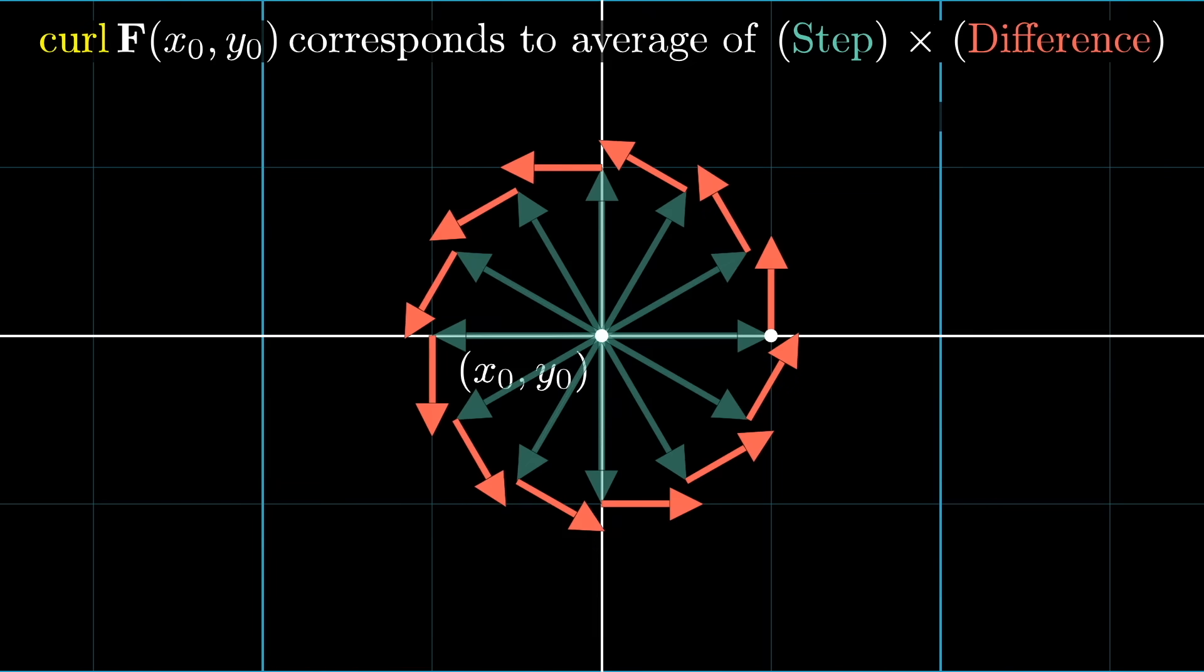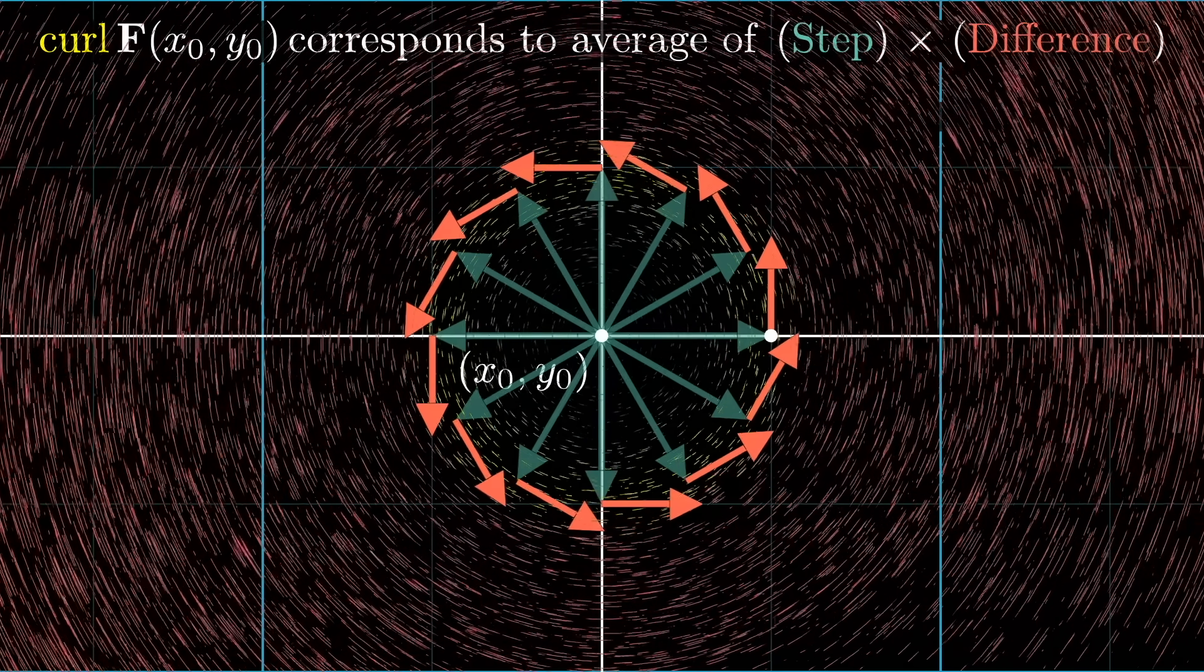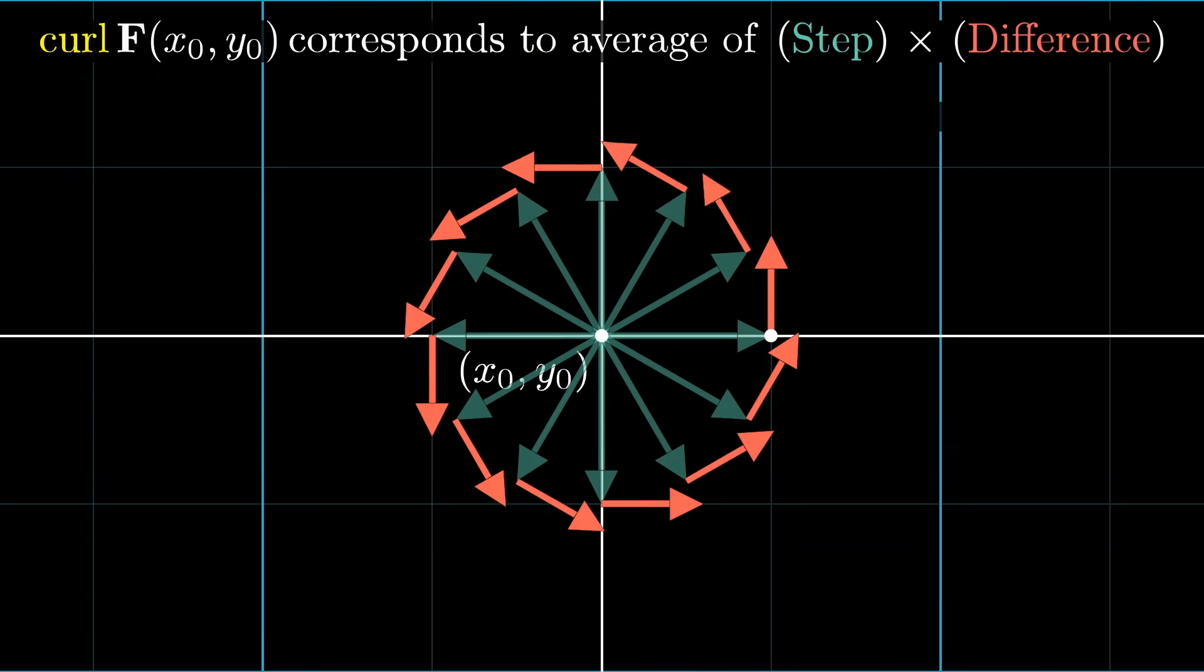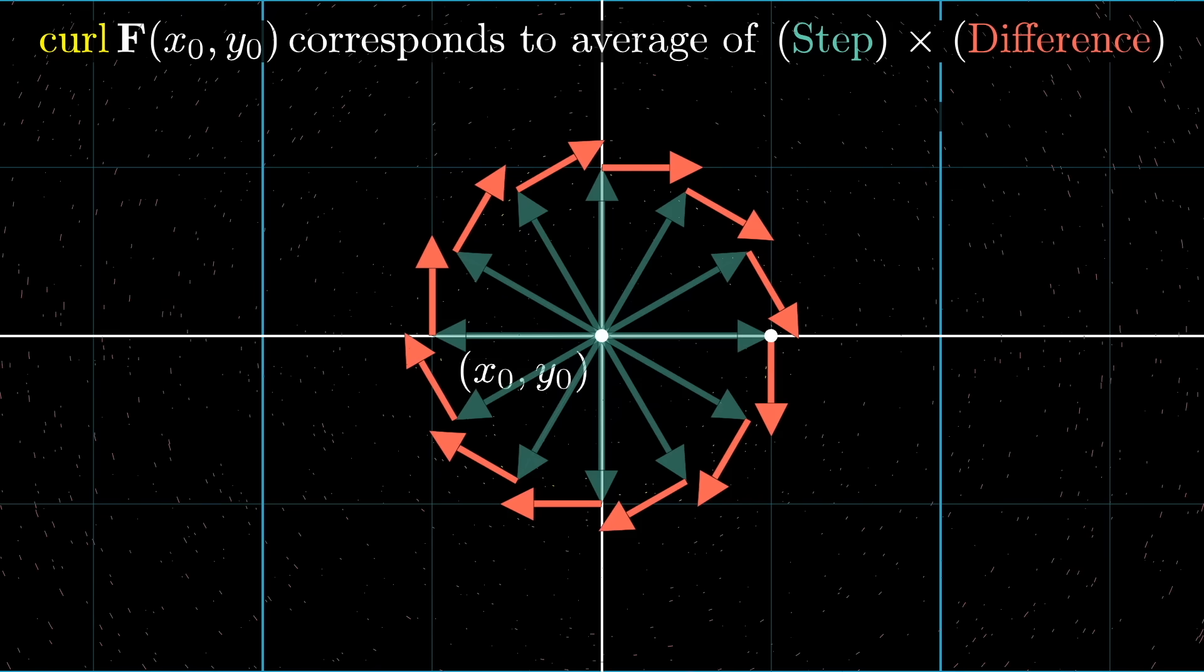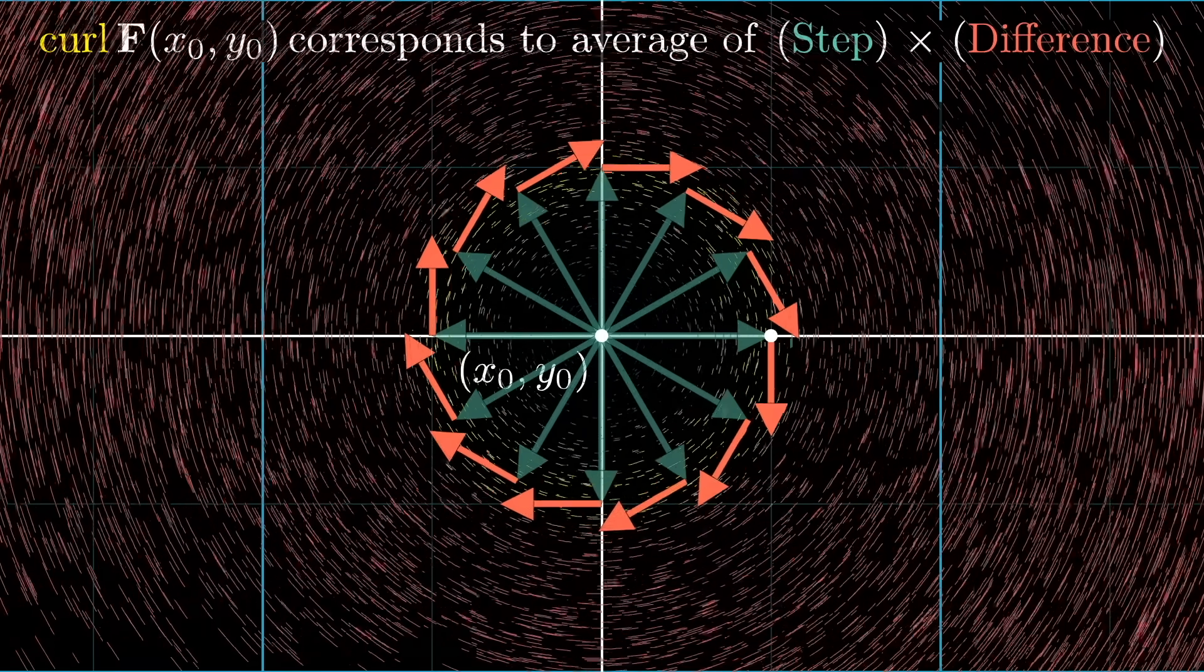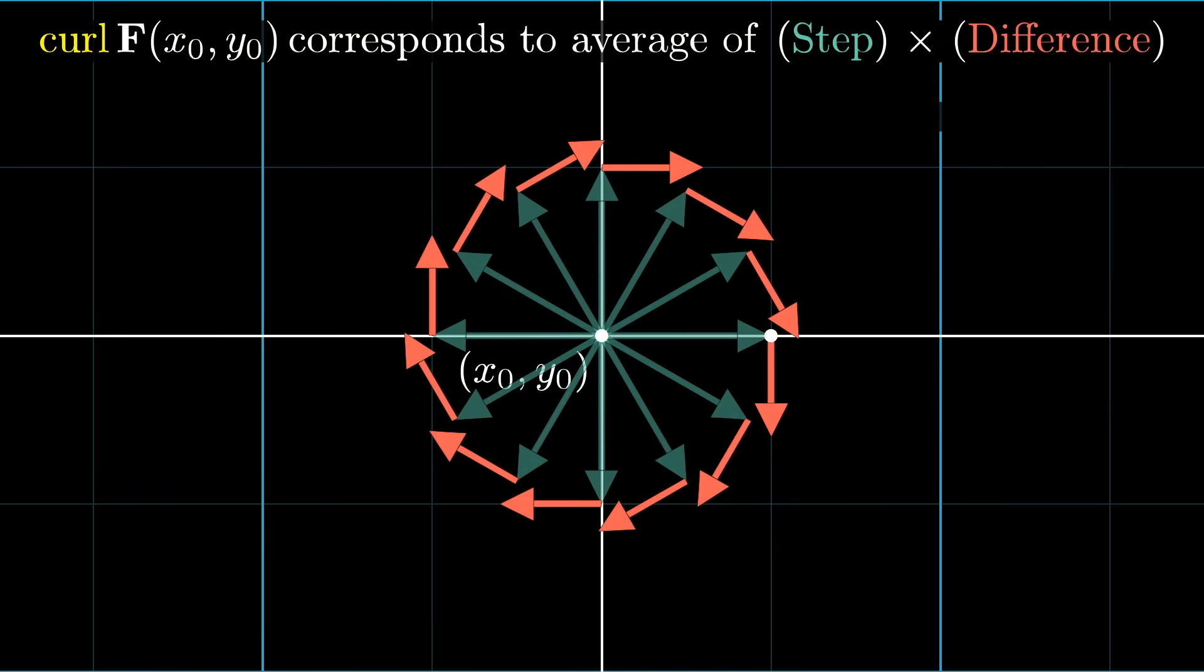You might think of the curl as a sort of average of this step vector difference vector cross product. If a step in some direction corresponds to a change perpendicular to that step, that corresponds to a tendency for flow rotation.